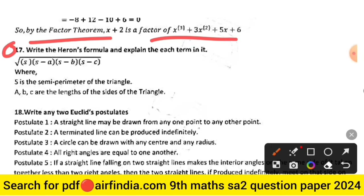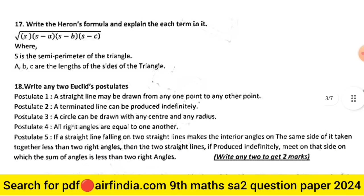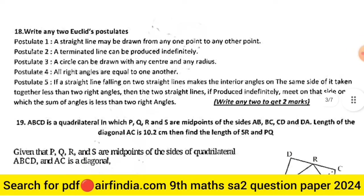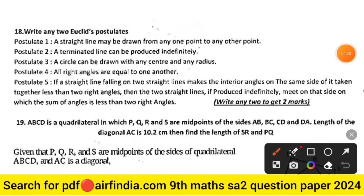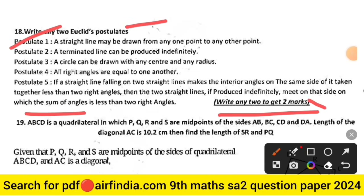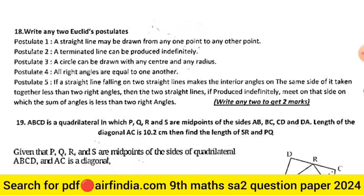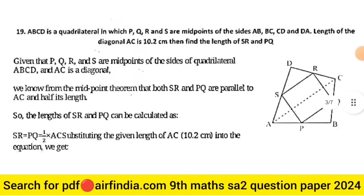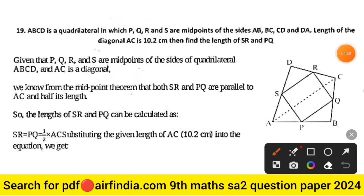Question 17: write Heron's formula and explain each term — the formula is given, where a, b, c are the lengths of sides of the triangle. Question 18: write any two of Euclid's postulates. There are five postulates in total; write any two to get full marks.